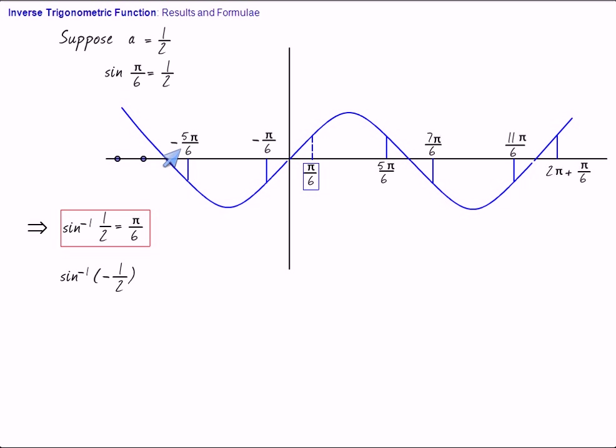But this has an advantage of being nearest to origin. So, sine inverse minus half is minus pi by 6.